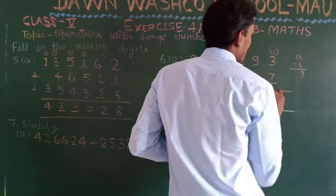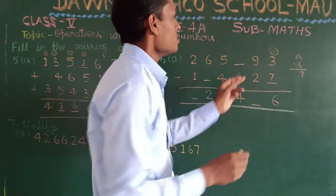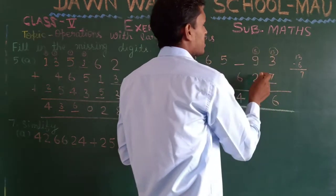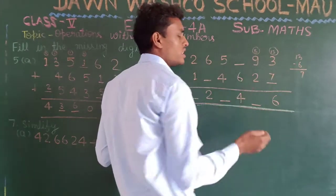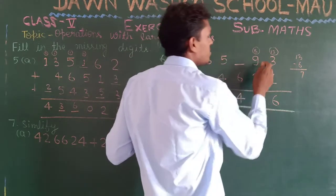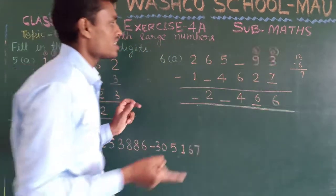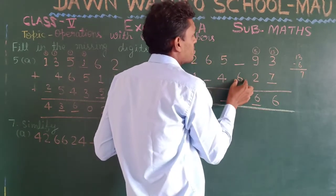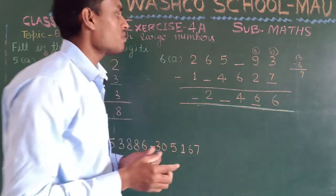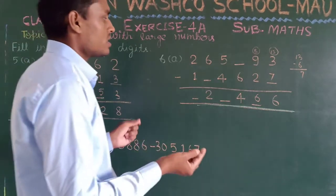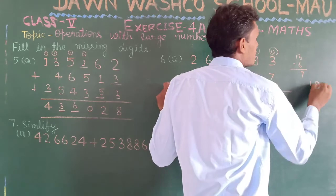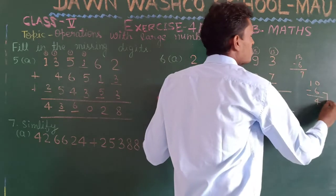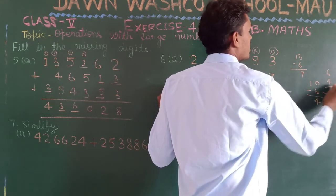Thirty minus 7 gives 6 — but we already borrowed 1 from here so it has become 8. Eight minus 2 gives 6. Next: here we have nothing to subtract from, and we need to subtract 6 to get 4. So we take it as 10 — 10 minus 6 is 4. Six plus 4 confirms this gives 10.